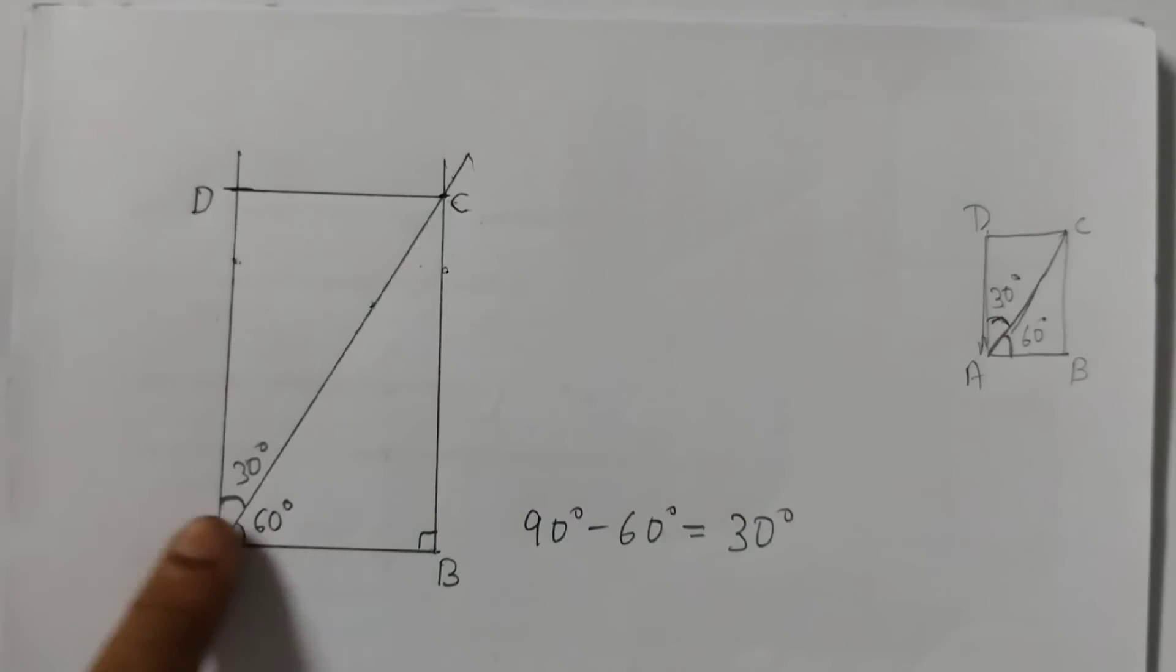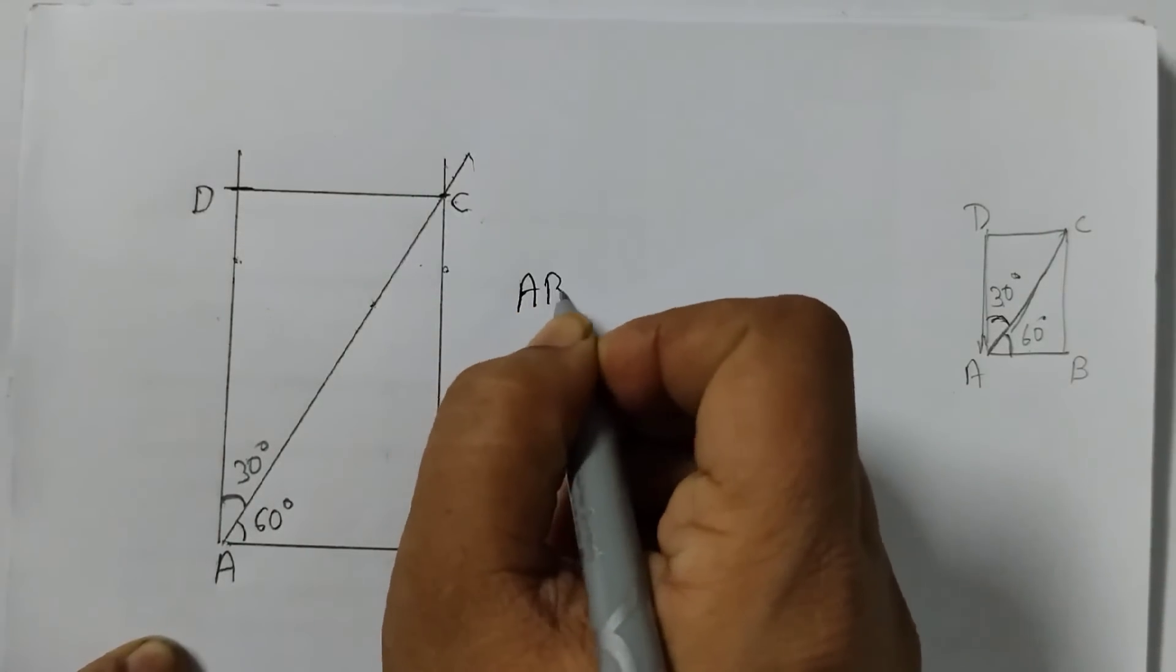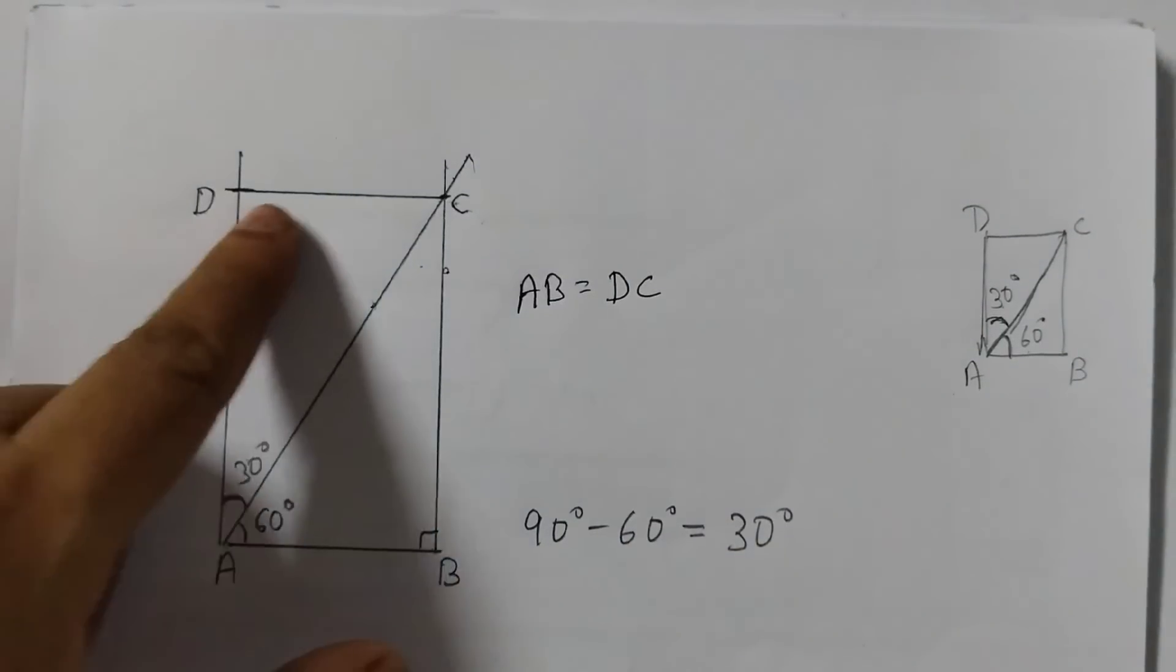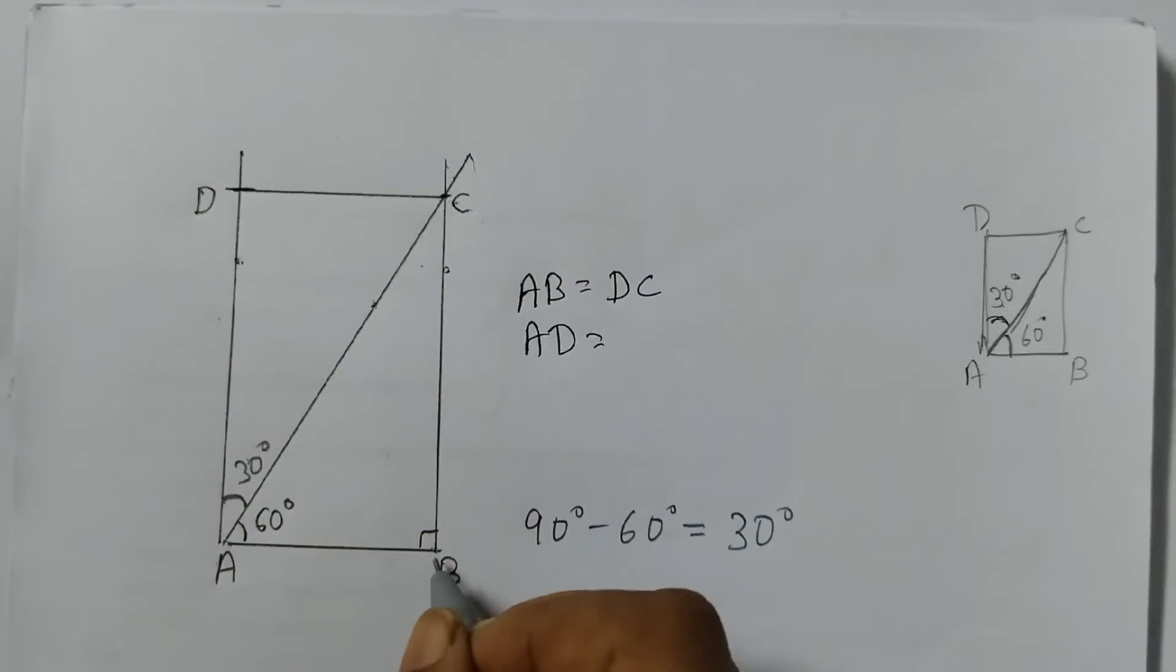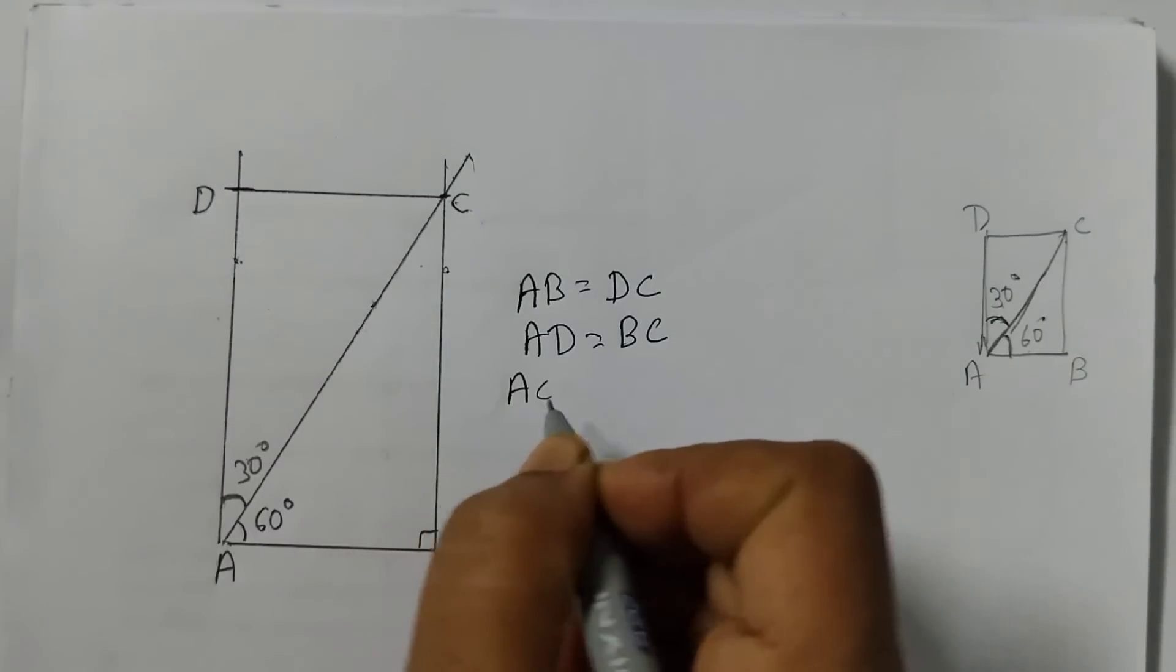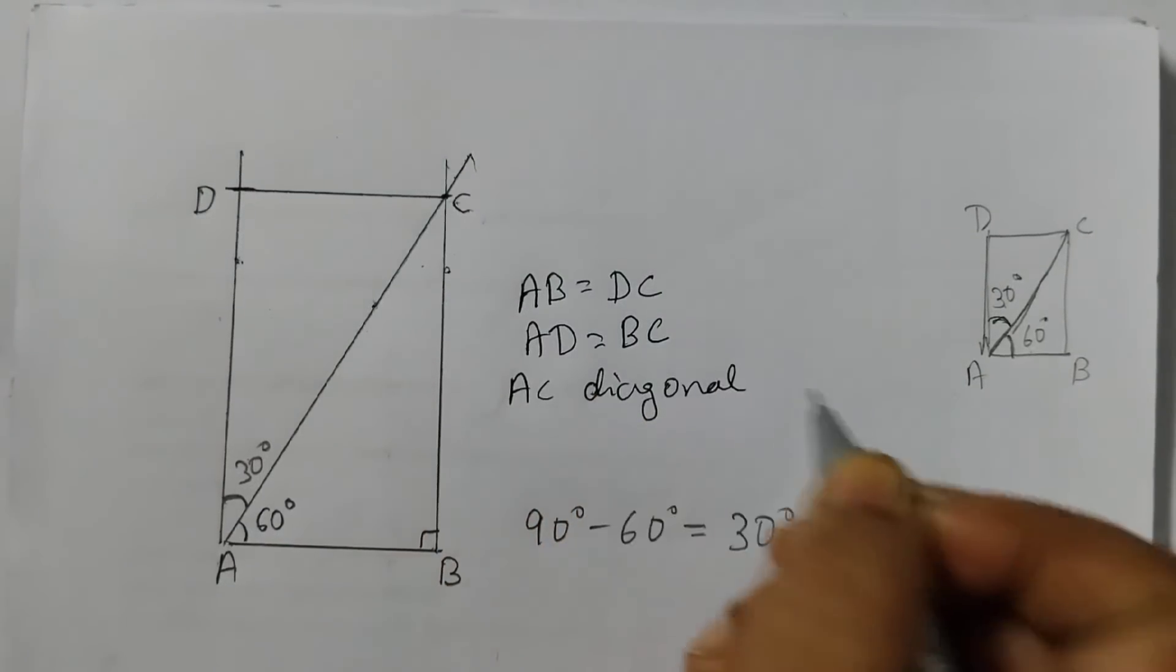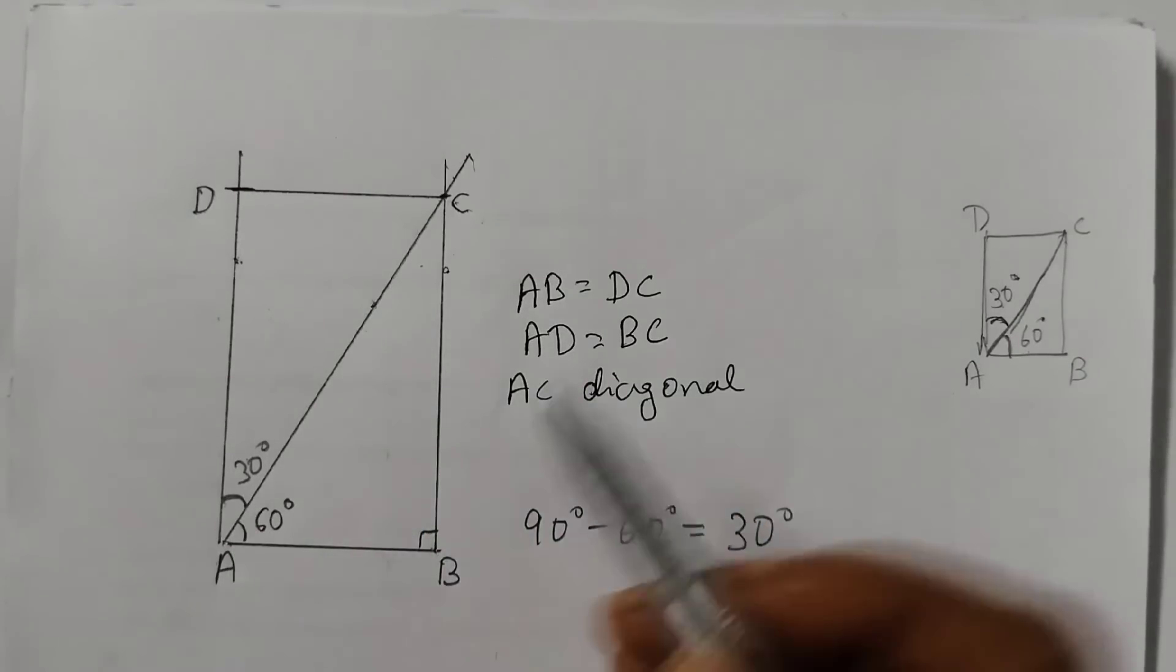So this is a rectangle here. AB is equal to DC. This length is equal to this length. And AD is equal to BC. AC is the diagonal. So this is the required rectangle where AC is the diagonal, and the diagonal is dividing it into 60 and 30.